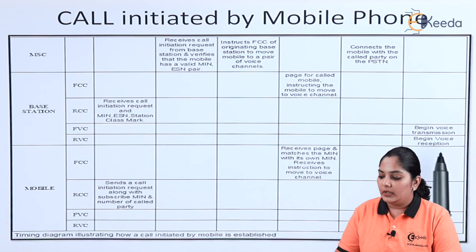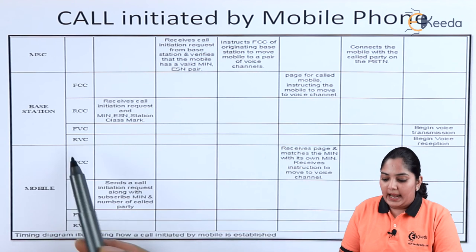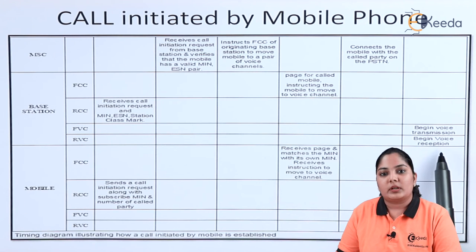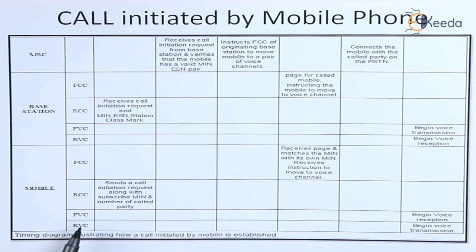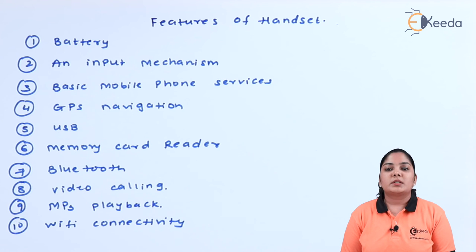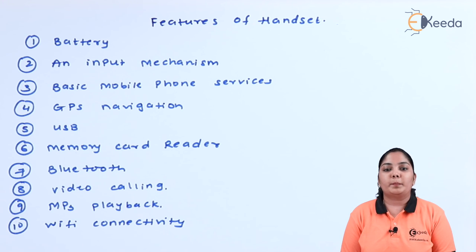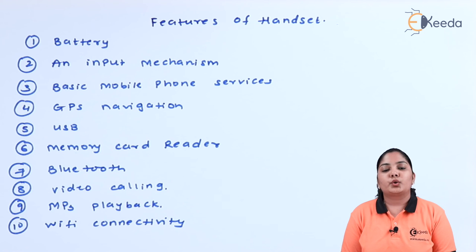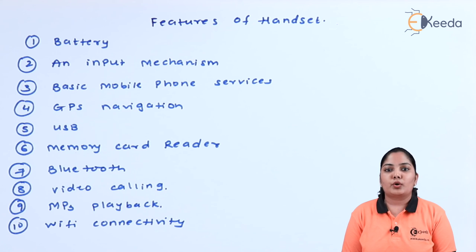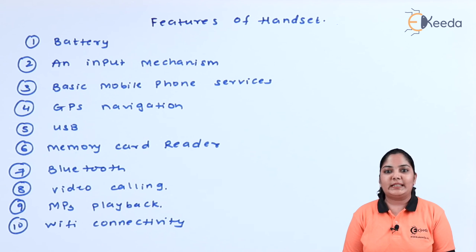After this, the MSC connects the mobile phone with the calling party on the PSTN. On the forward voice channel, the base station begins voice transmission and the mobile begins voice reception. On the reverse voice channel, the base station begins voice reception and the mobile begins voice transmission. Finally, every handset requires a battery for power, along with features such as GPS navigation, input mechanism, Wi-Fi, Bluetooth connectivity, video calling, MP3 playback, and so on. Thank you for watching — stay tuned and subscribe to Ikida.